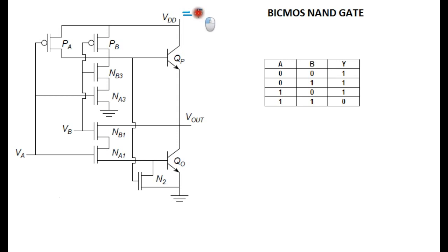As you can see, there are two PMOS, PA and PB, and four NMOS, NA1, NB1, NA3 and NB3. And also there are two BJTs, QP and QO, and both are NPN transistors. The voltage source VDD is equal to 5 volts. I have given the truth table of BiCMOS NAND gate - it is just the logic of a NAND gate.